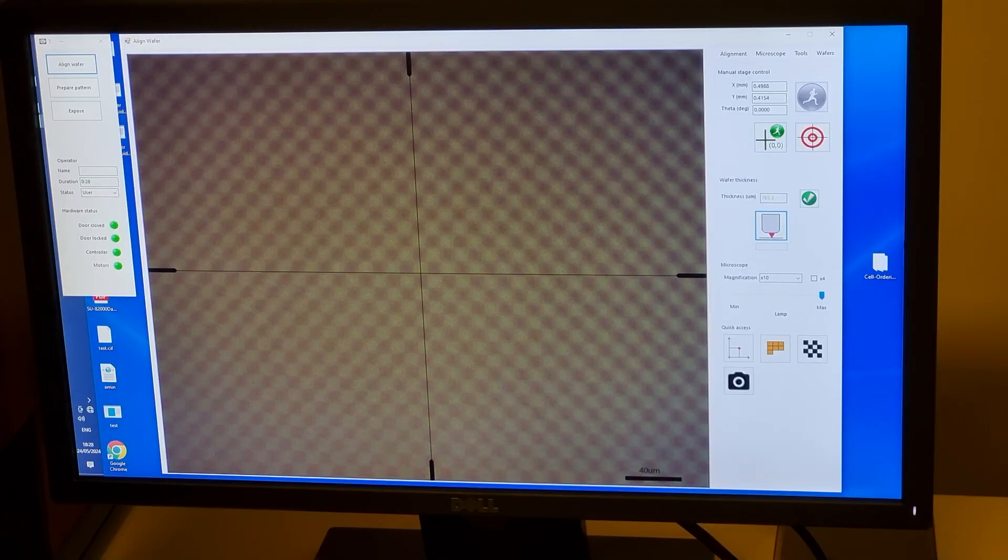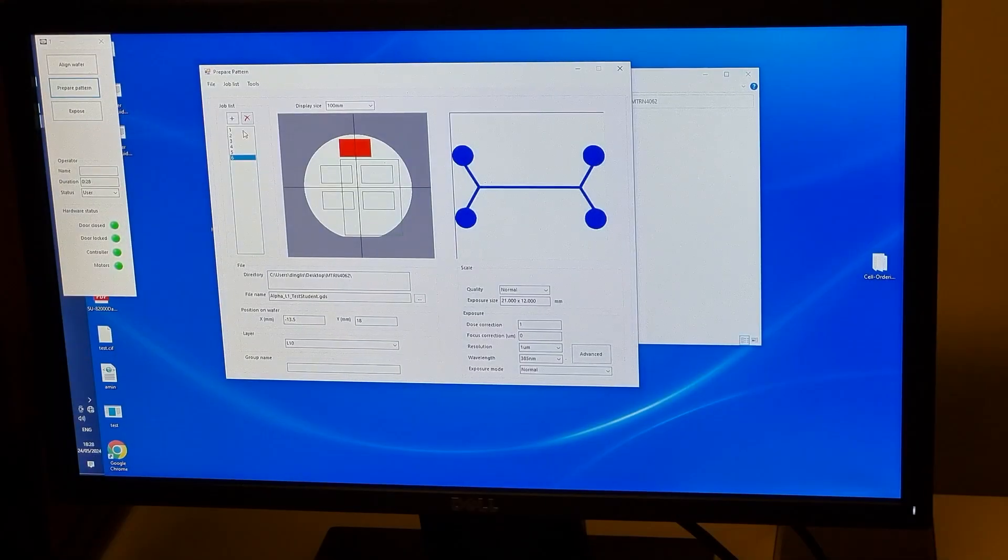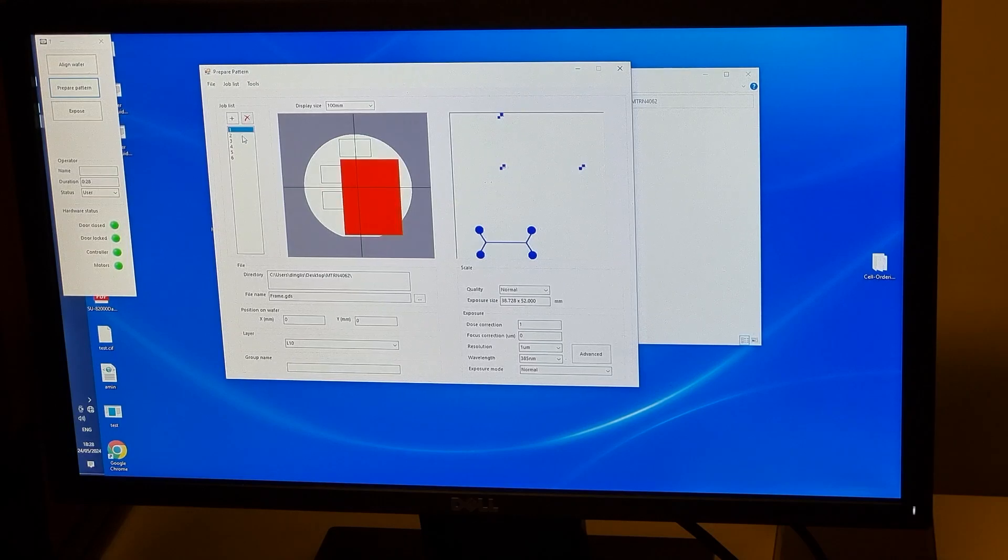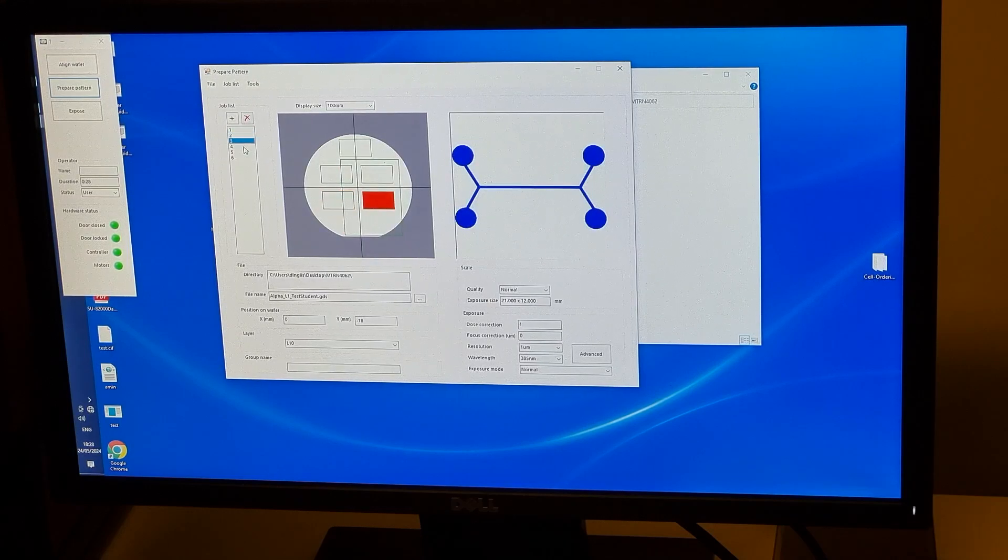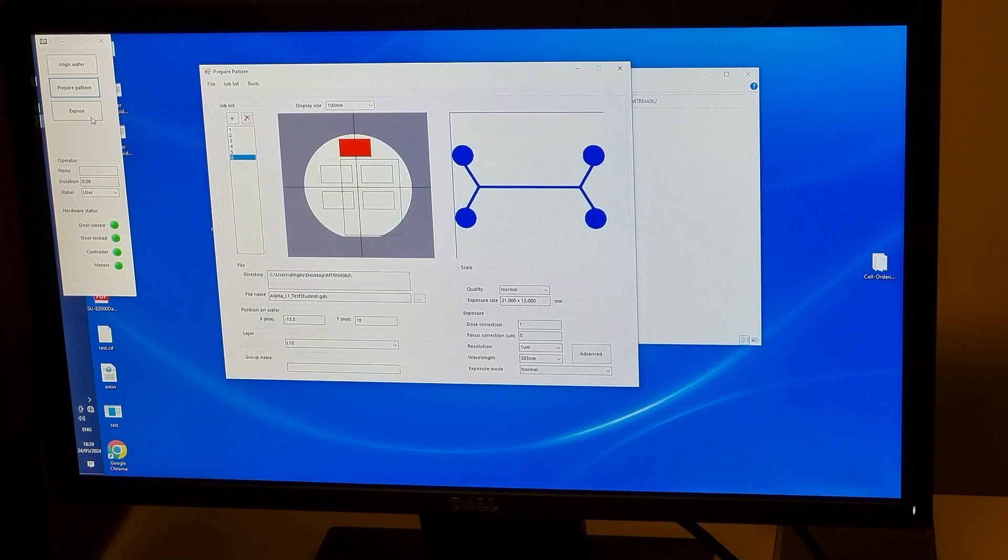The next window, selected in the top left corner, is Prepare Pattern. We've already loaded some mask files and specified their locations. The red box shows a minimum rectangular bounding box for the pattern. A more in-depth introduction to the machine can be found on YouTube from the Stanford University Nanofab, and we can provide you with a copy of the manual.